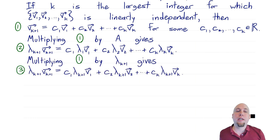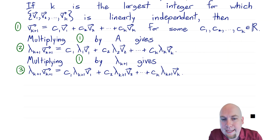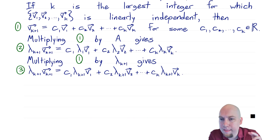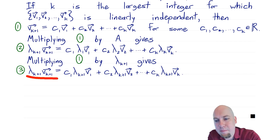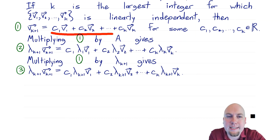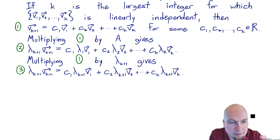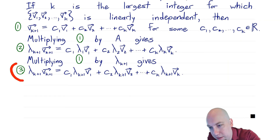I'm also going to construct one more equation. If I take equation one and instead of multiplying on the left by A, I multiply by lambda k+1, then the left hand side is the same — just vk+1 times lambda k+1. The right hand side will be c1 v1 times lambda k+1, plus c2 v2 times lambda k+1, all the way up to ck vk times lambda k+1. Call that equation three.